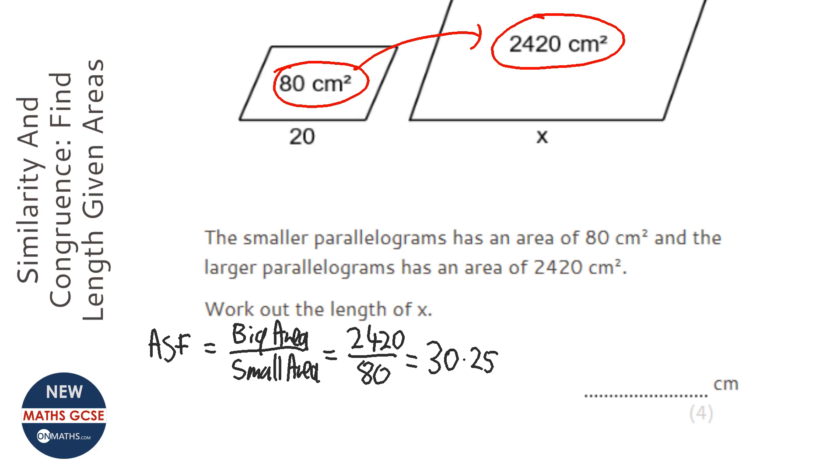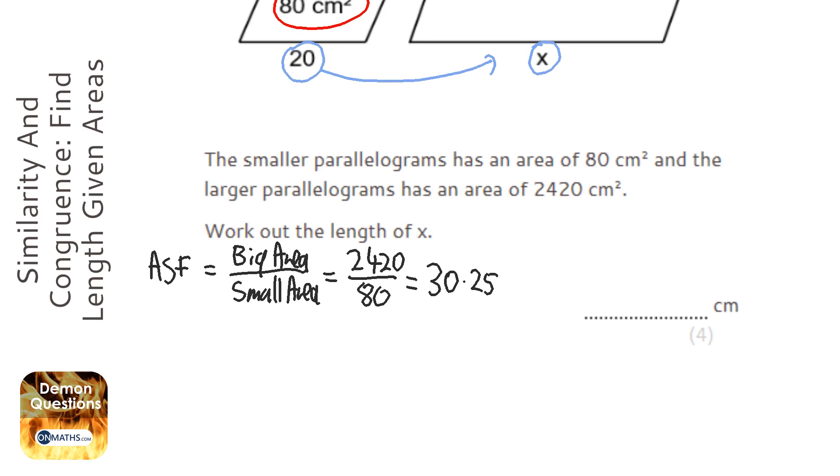Now, we're asked to find what the length is on the bigger parallelogram. So we don't times it by 30.25 because that's the area scale factor. We need to work out what the linear scale factor is. And it's dead easy because to get from linear scale factors to area scale factor, we square it.